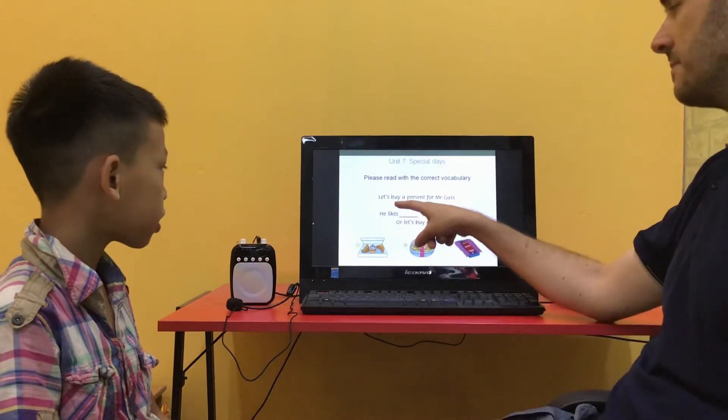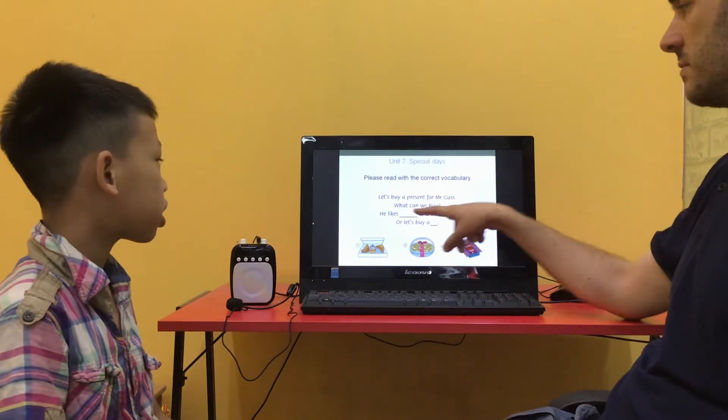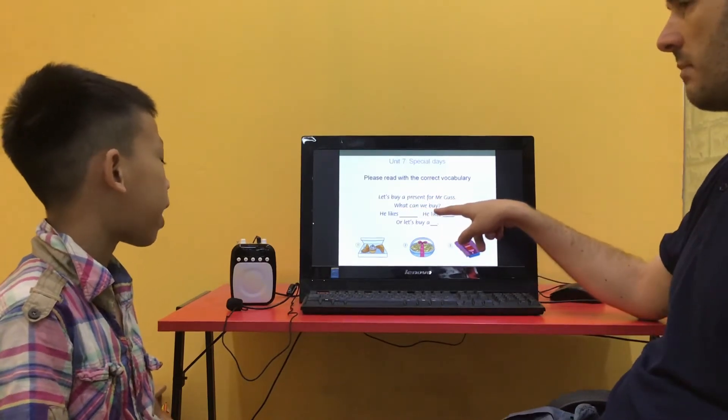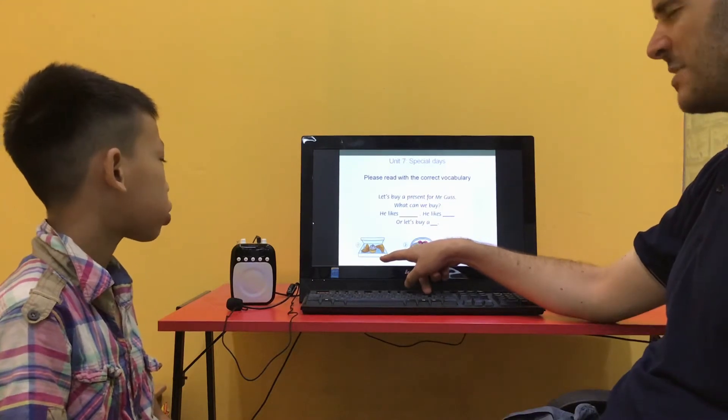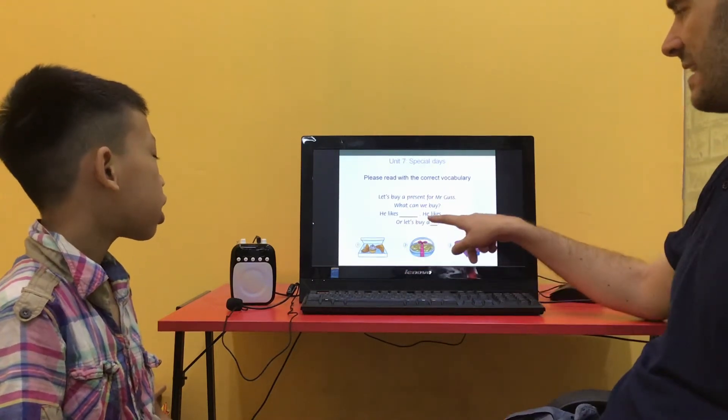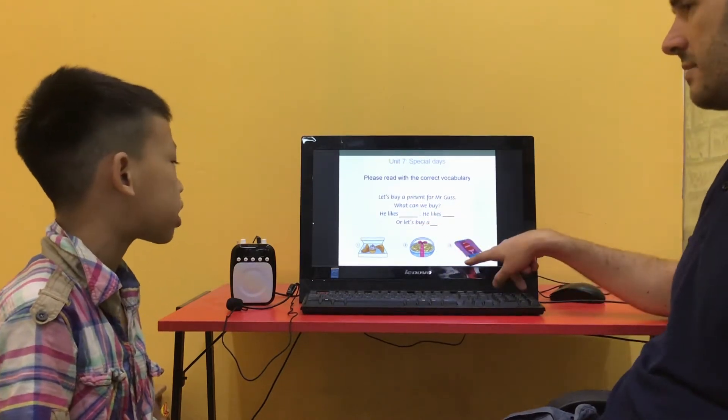Let's buy a present for Mr. Gus. What can we buy? He likes pastries. He likes nuts. Or let's buy a tie. Very good.